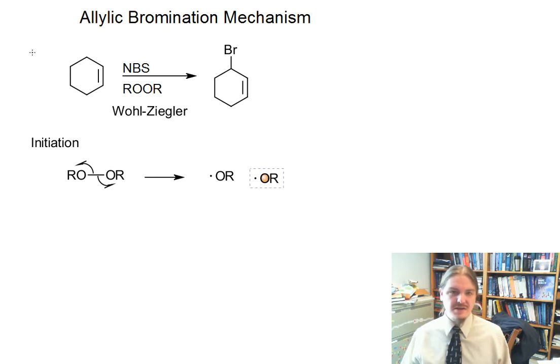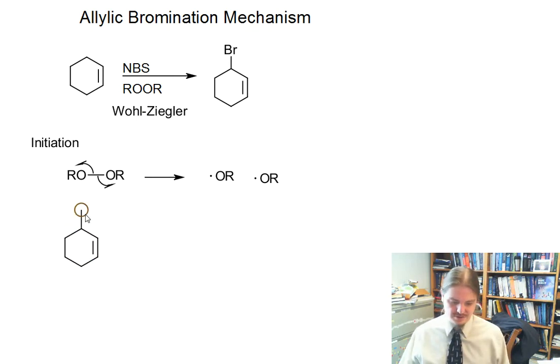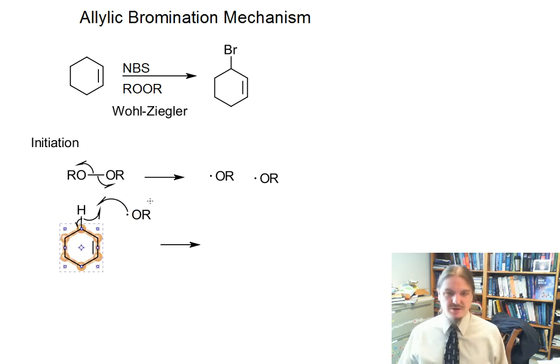And like all the reactions that have alkoxy radicals, there's actually a second initiation step because the alkoxy group does not end up in the product. The alkoxy group ends up abstracting the hydrogen to make the allyl radical that we need going forward.